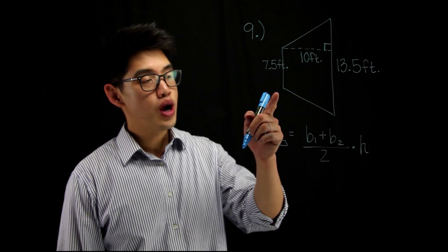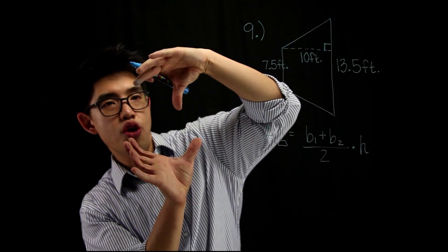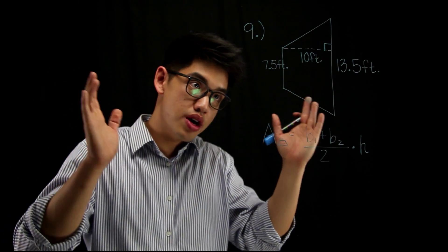Alright, for number 9, we're gonna find the area of this trapezoid. And if you look at this trapezoid, it looks kinda weird, cause it looks like someone tilted it over on its side. But everything else is the same thing.